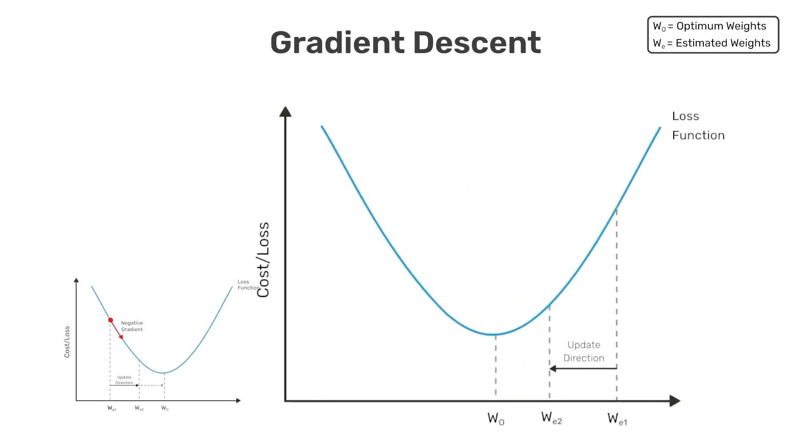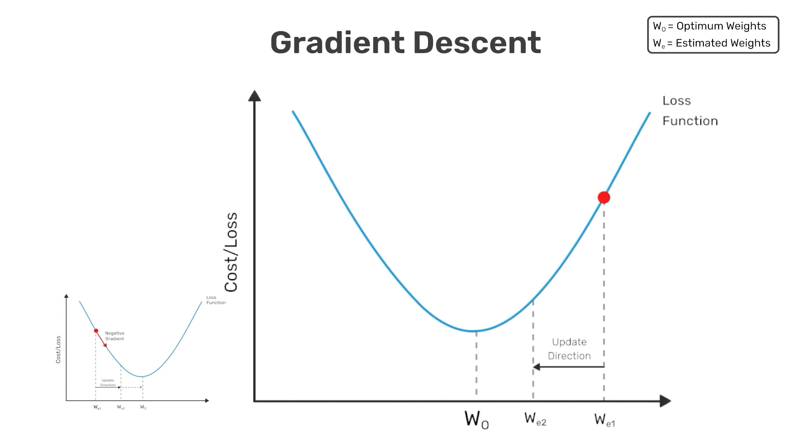On the other hand, if our current weight is greater than W_0, as shown in the plot to the right, the gradient would be positive. But here we see that we'd need to reduce the value of the current weight to get closer to the optimum value of W. And therefore, we still need to move in a direction that's opposite from the sign of the gradient.